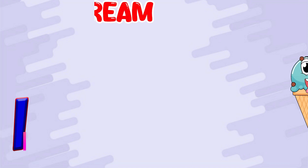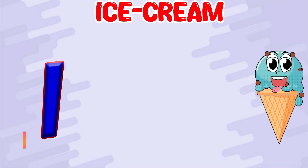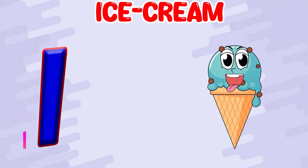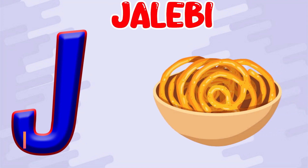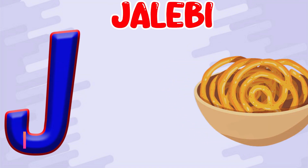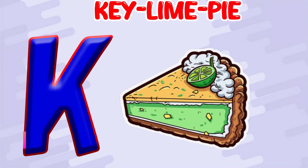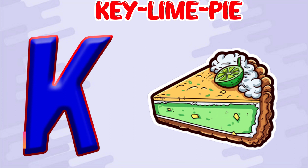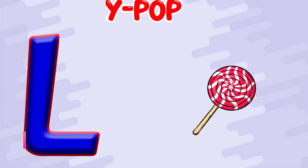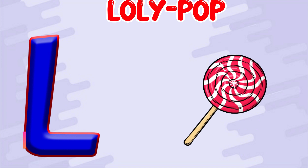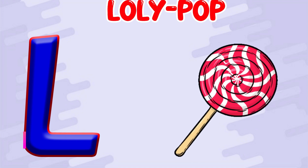I is for Ice Cream. I. Ice Cream. J is for Jelly Bean. J. Jelly Bean. K is for Key Lime Pie. K. Key Lime Pie. L is for Lollipop. L. Lollipop.